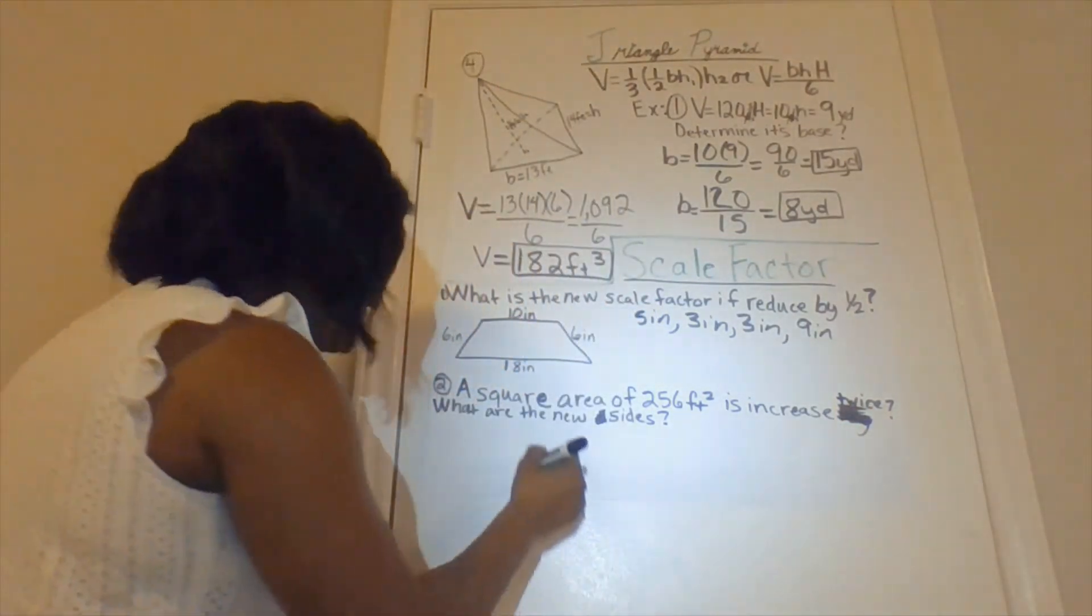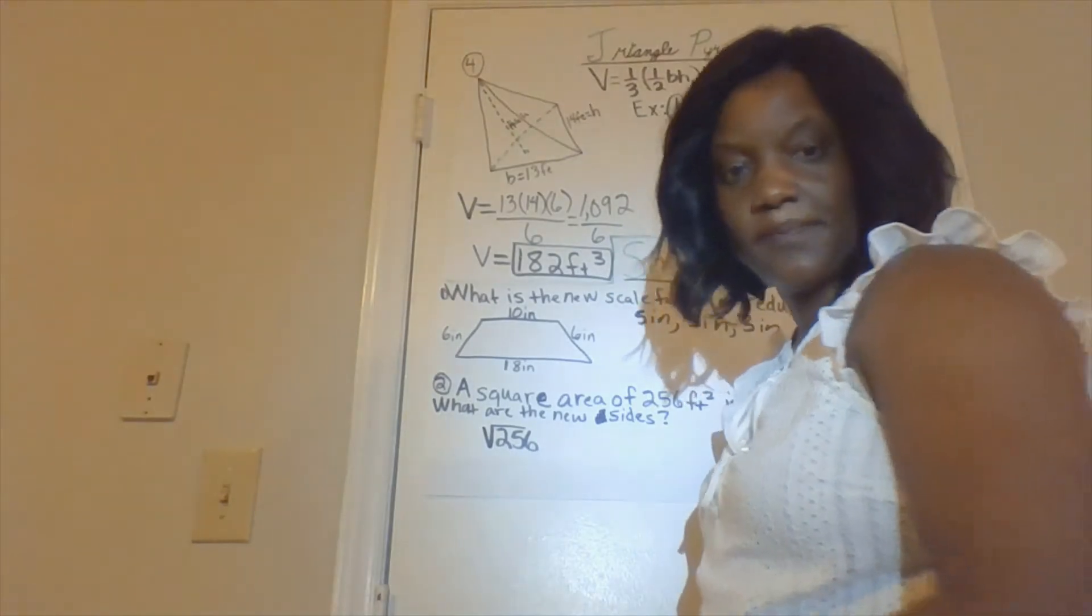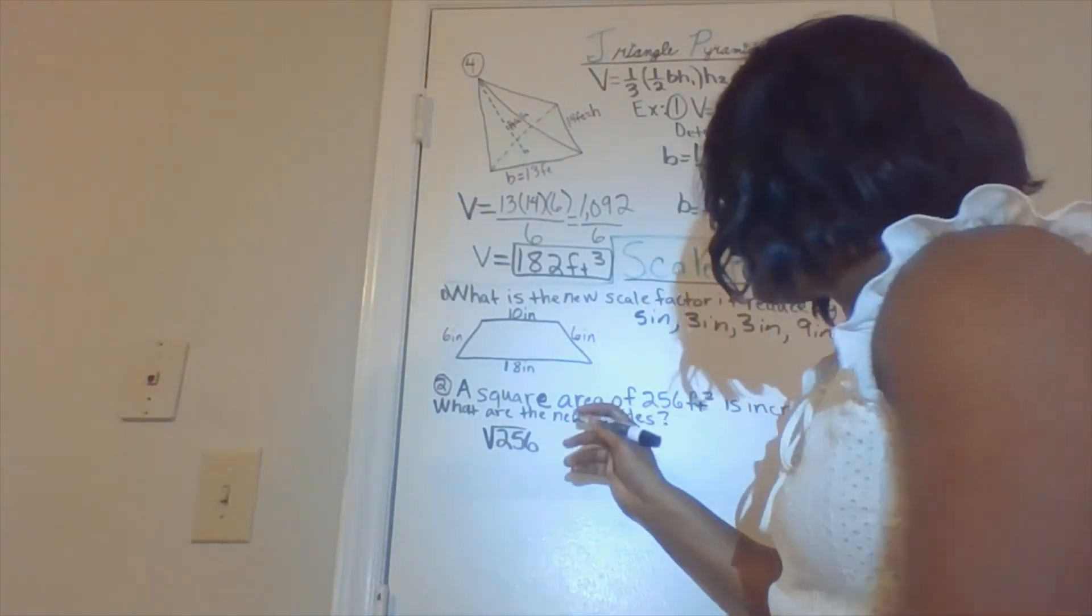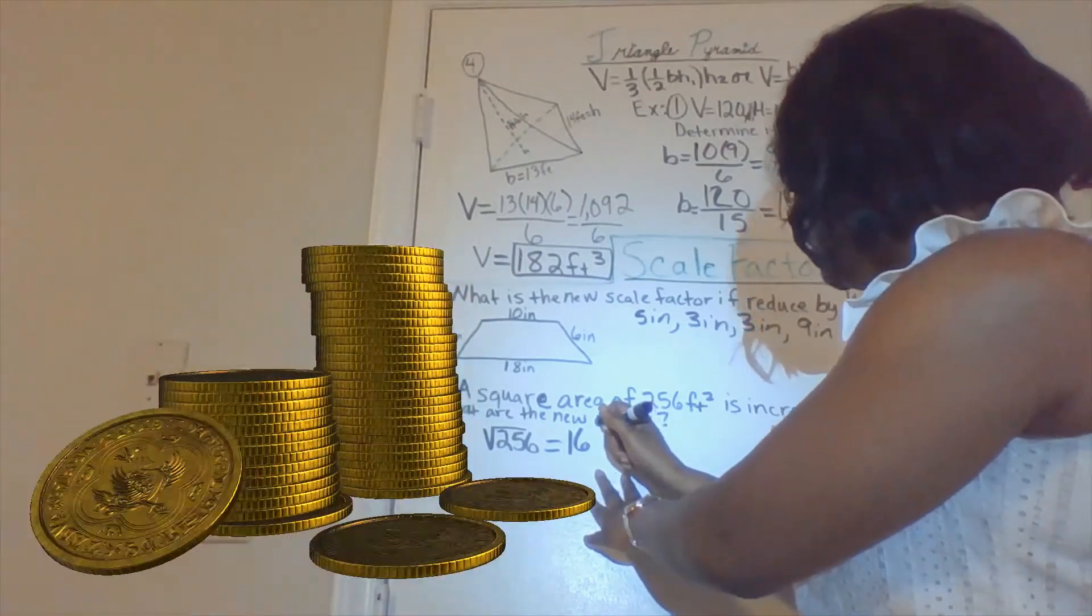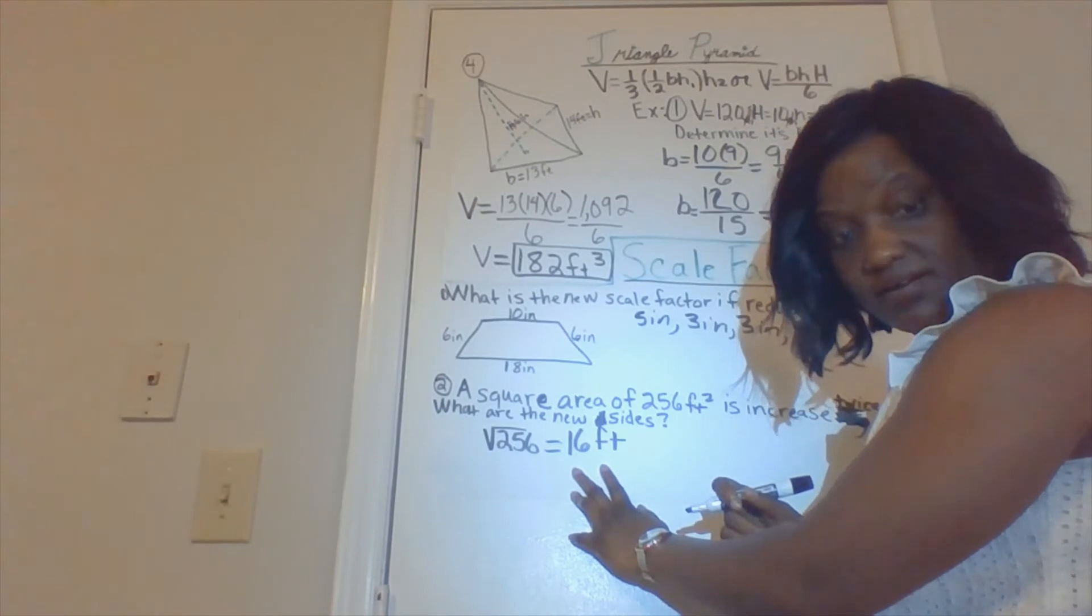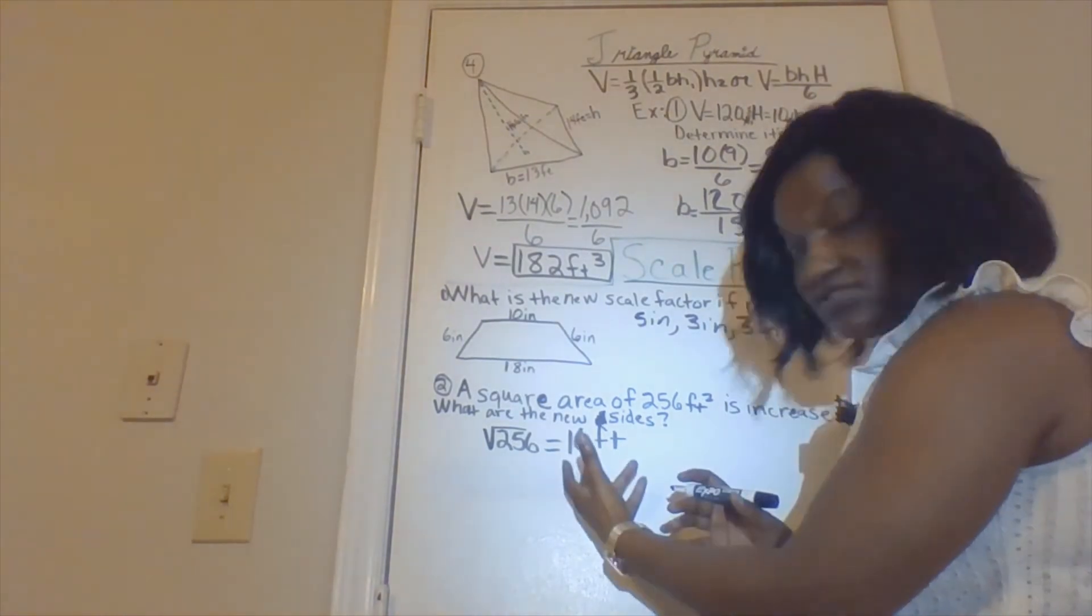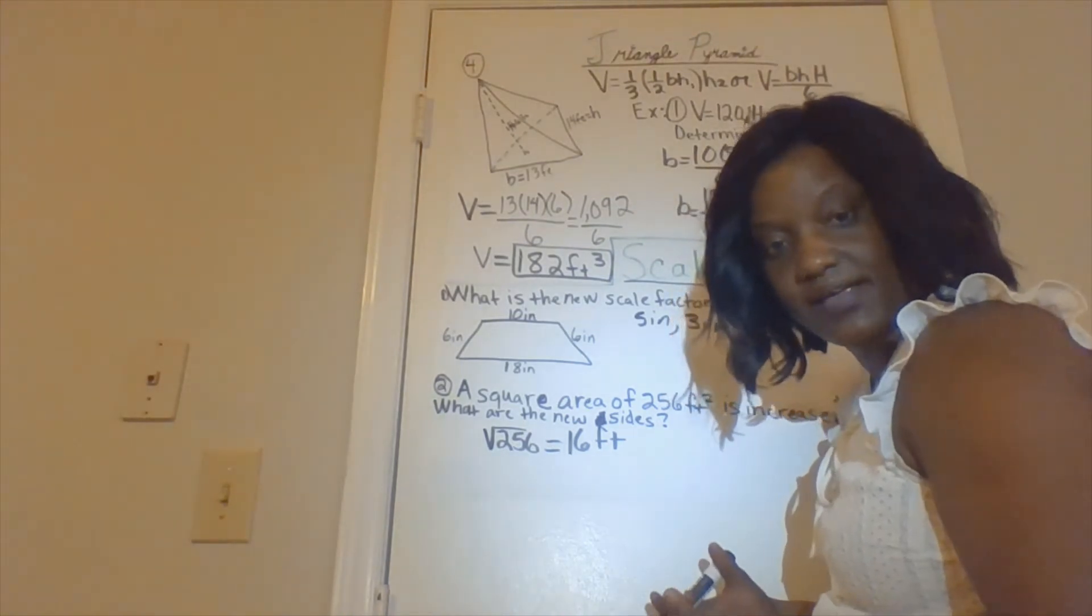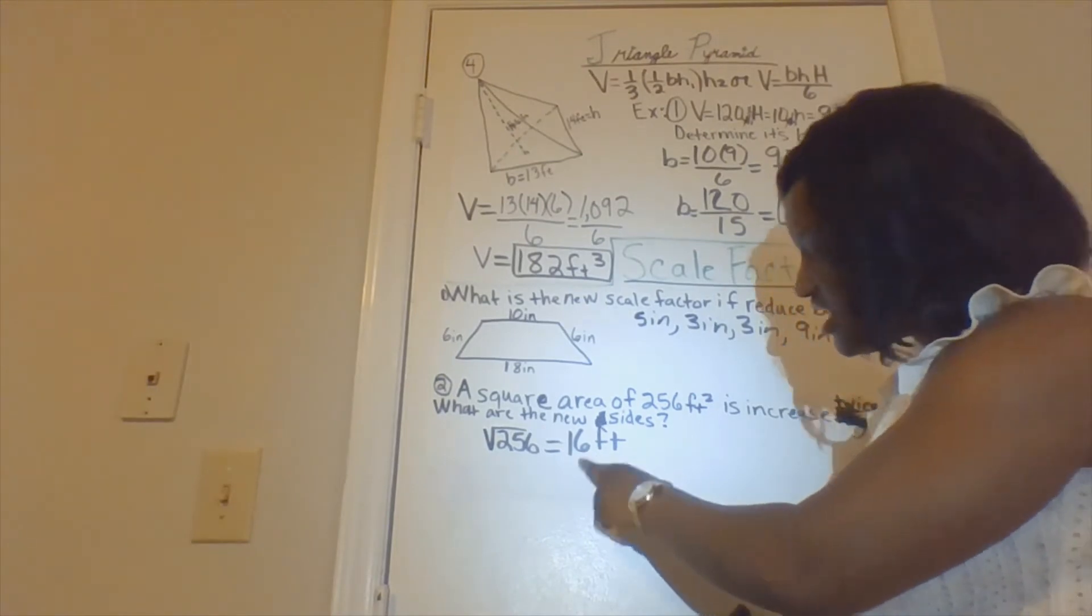The square root of 256 is 16 feet. So that is my new dimensions on my square. However, it says it's increased twice. What are the new sides? The size of the square is 16 feet and it is increased twice. That means I'm multiplying by 2. Anytime I say increase, triple, you're multiplying. So times 2.